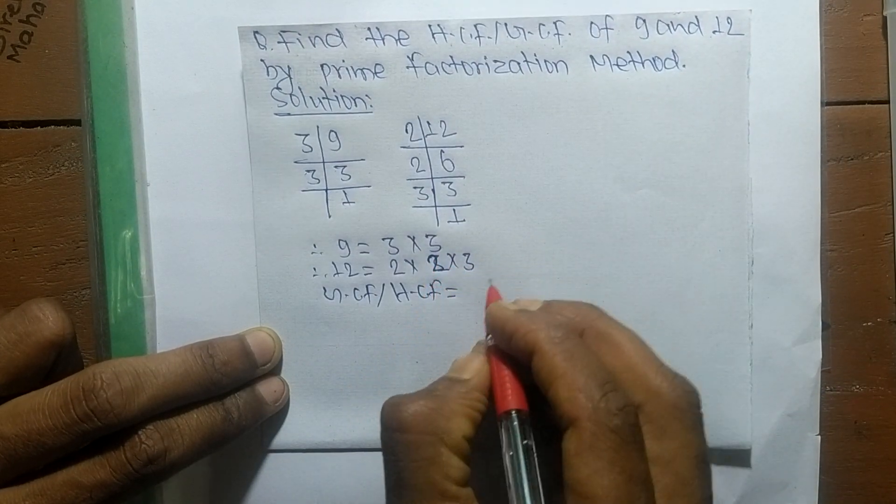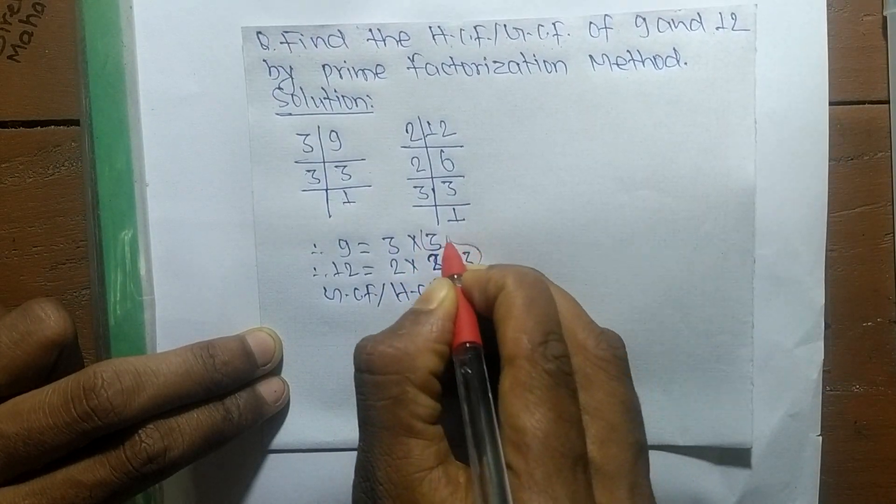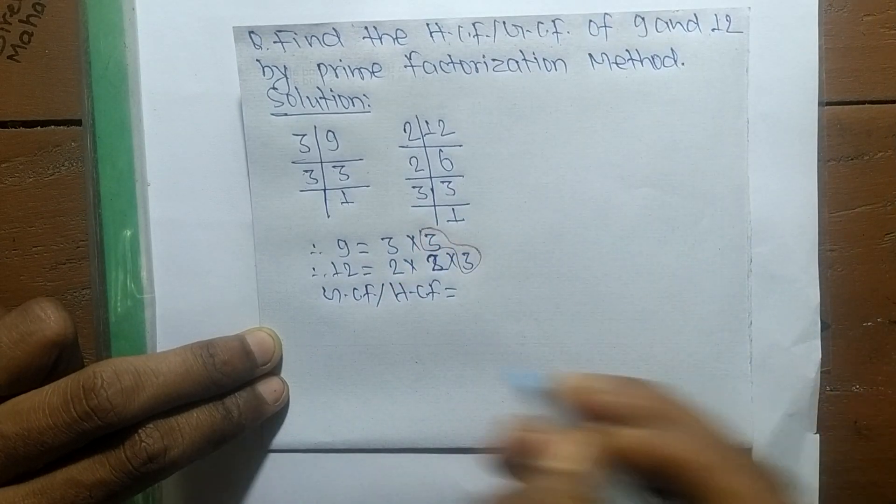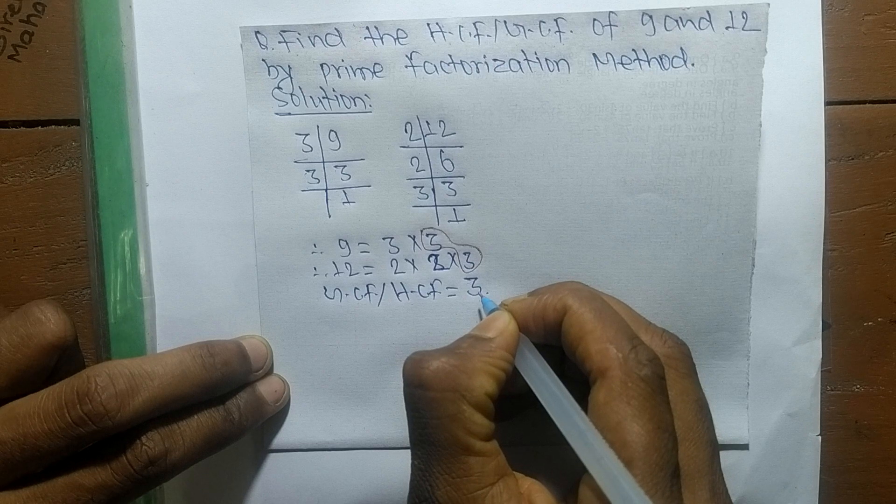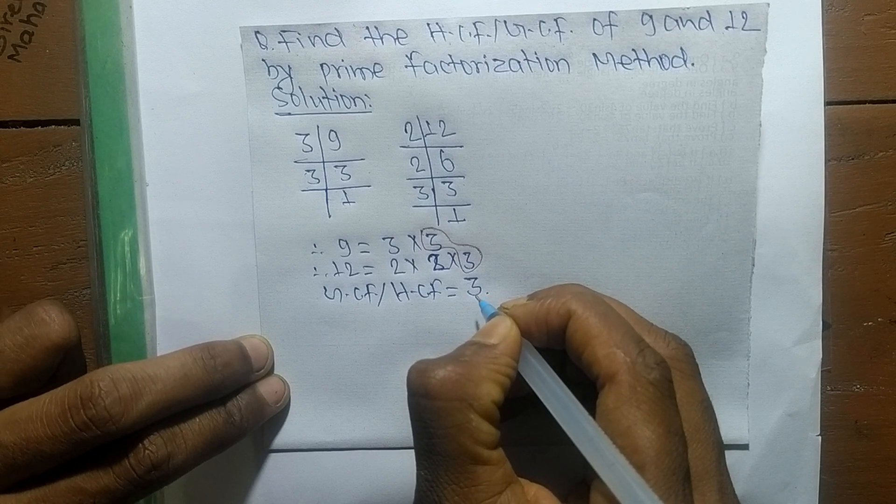The common factor here is 3, so GCF or HCF is 3. That's all for today, and thanks for watching.